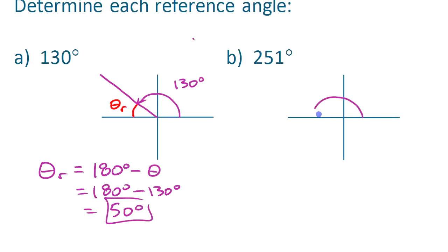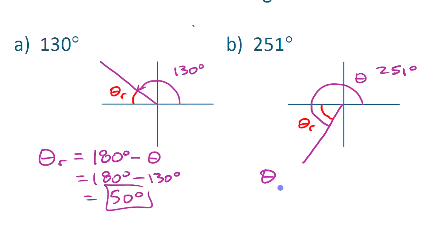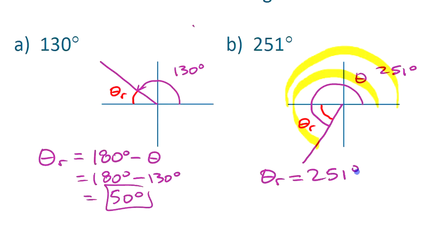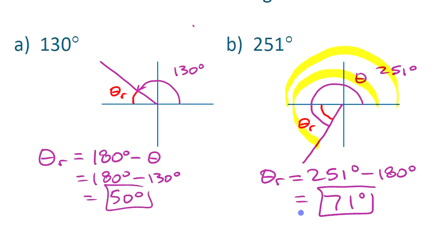The second example, 251 degrees, ends up in quadrant three — the one that sometimes people have trouble with. The reference angle is theta r, and we label the angle theta as 251. To find that reference angle, we take 251 and subtract 180, because we need to remove the half-turn. That gives us 71 degrees as your reference angle.